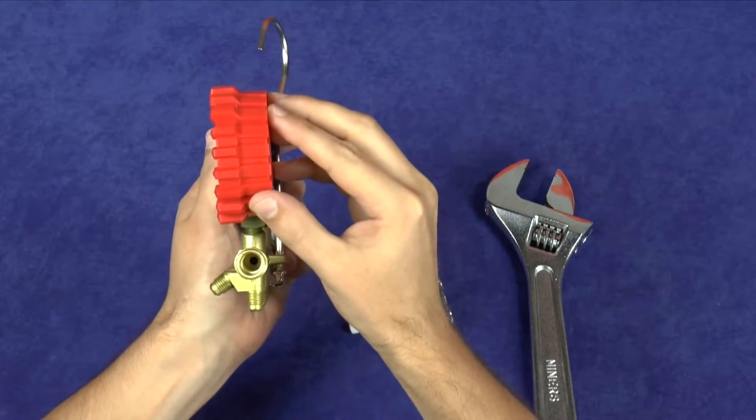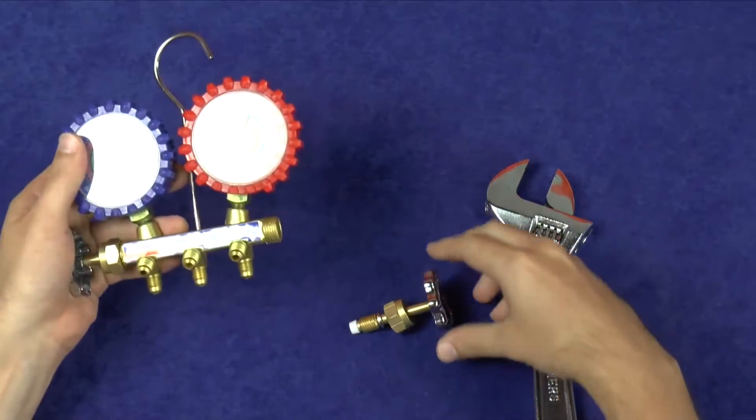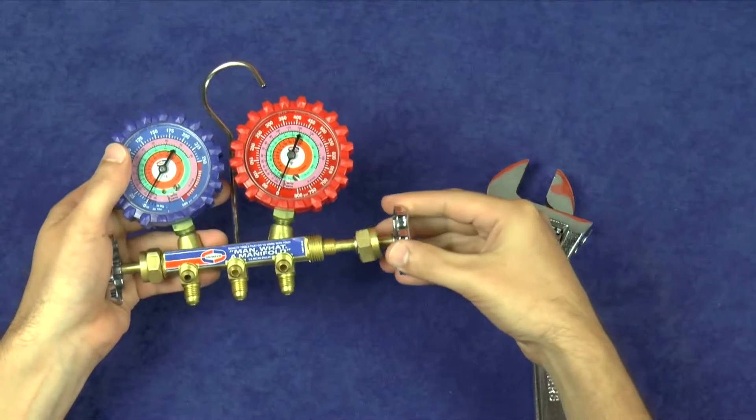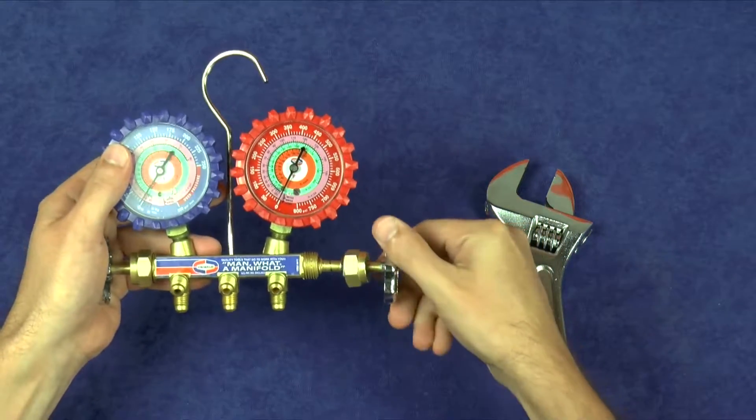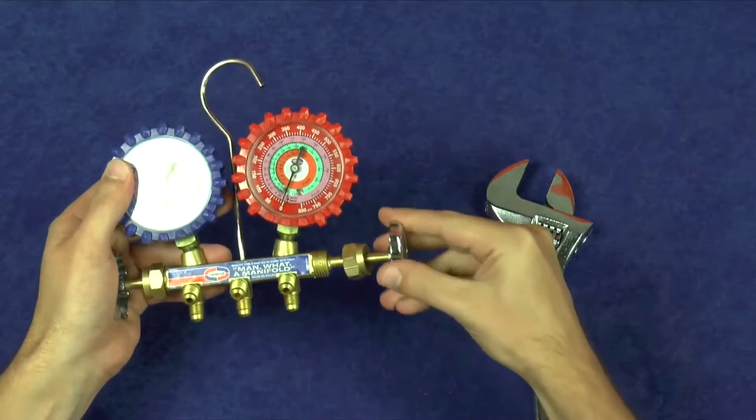Once the manifold and valve stem assembly are clear of foreign debris, reattach the valve stem assembly by turning the metal hand wheel clockwise and tighten the brass packing nut on the manifold body for a complete seal.